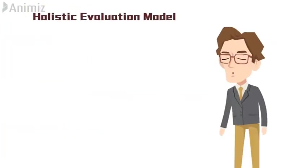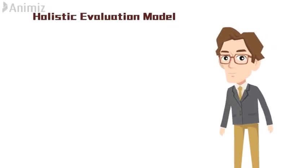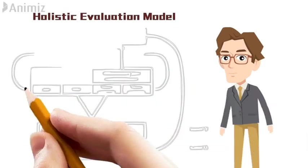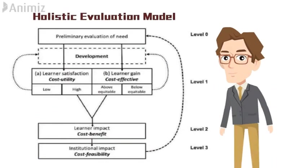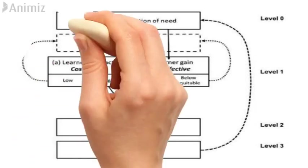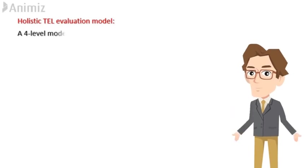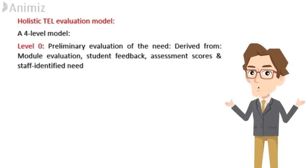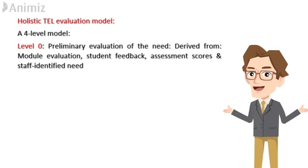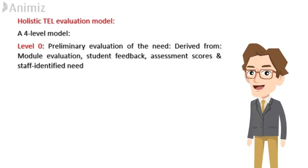The holistic TEL evaluation model is a four-level model. Level 0 is the preliminary evaluation of need, derived from module evaluation, student feedback, assessment scores, and staff-identified need.